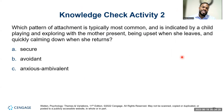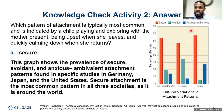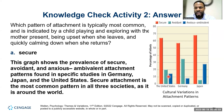The question is: which pattern of attachment is typically most common and indicated by a child playing and exploring with the mother present, being upset when she leaves, and quickly calming down when she returns? The most common one is secure attachment. Here's the graph showing the most common is secure, the avoidant is the second most common, and the anxious ambivalent — depending on what country you're in — is less common in the Americas. It really depends on the attachment that parents have with their infants when they're growing up.